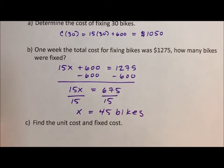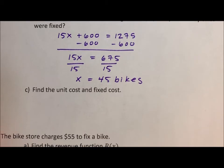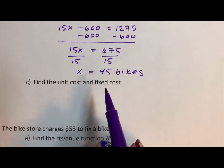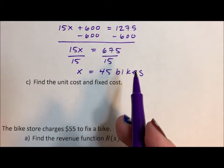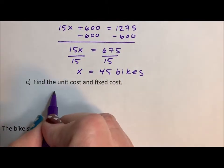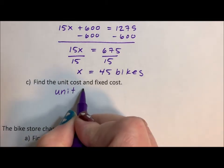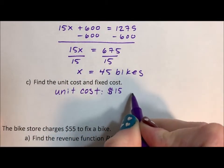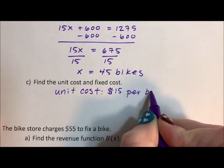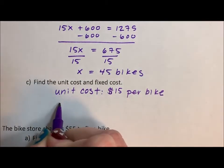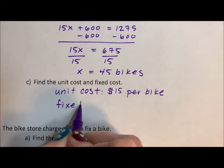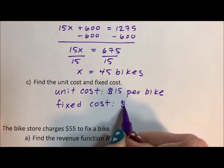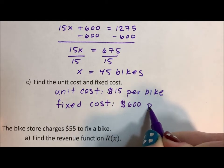It's a long problem, just FYI, a lot of things going on. Find the unit cost and fixed cost. So this is going back to how I defined our original problem. The unit cost is $15 per bike. The fixed cost is $600 per week.